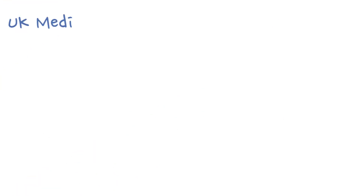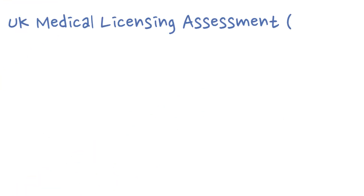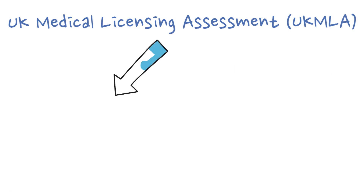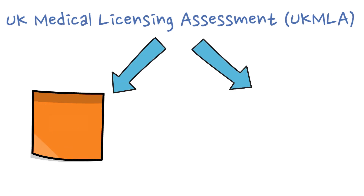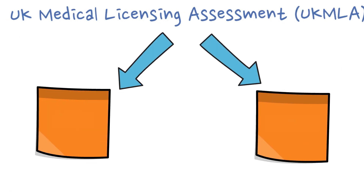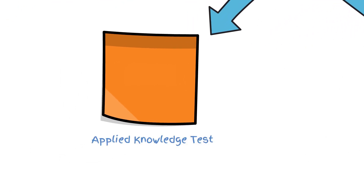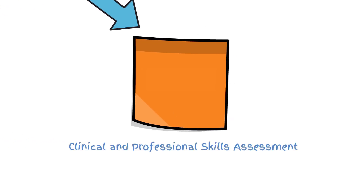The UK MLA is a two-part assessment exam, like the PLAB exam. The first part is called the Applied Knowledge Test, also known as AKT, and the second part is called the Clinical and Professional Skills Assessment, also known as CPSA.